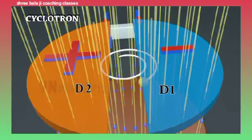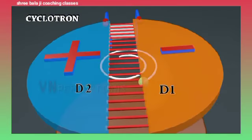When it comes out of D, it comes under the influence of electric field. Once again, the electric field accelerates the charged particle and now the velocity becomes V3.